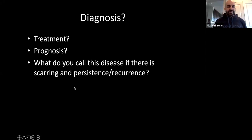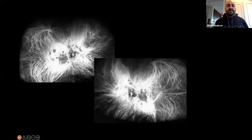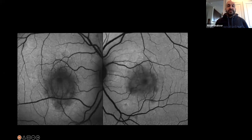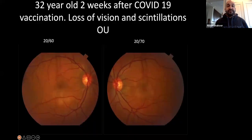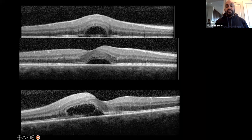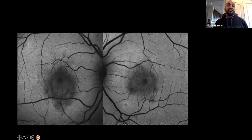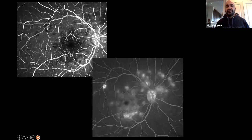APMPPE — it's the worst acronym I've ever seen. The COVID-19 infection may have triggered this through immunogenicity. We're actually writing up a series of cases with COVID and inflammatory eye disease. This gentleman went on to get worse, developing more hyper and hypo-autofluorescent lesions in a cockade-like pattern.